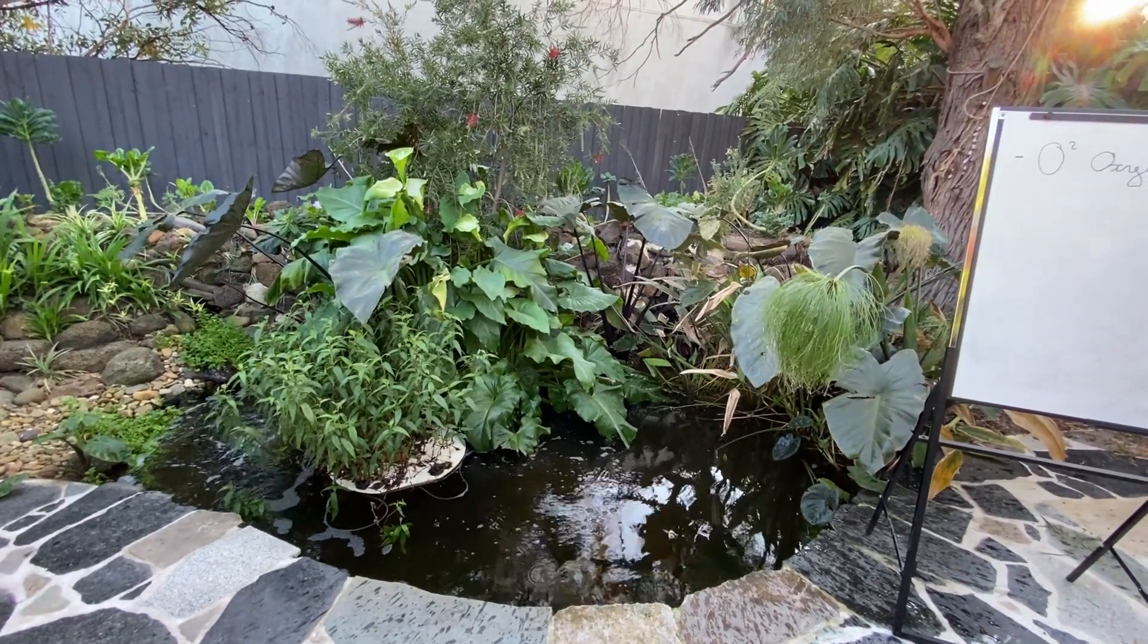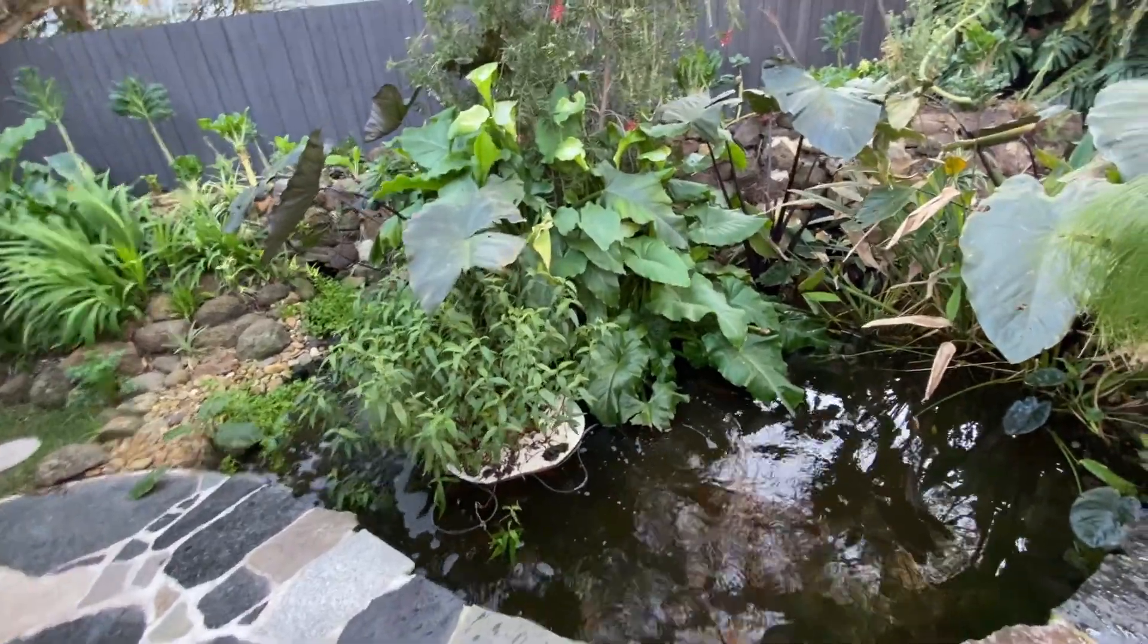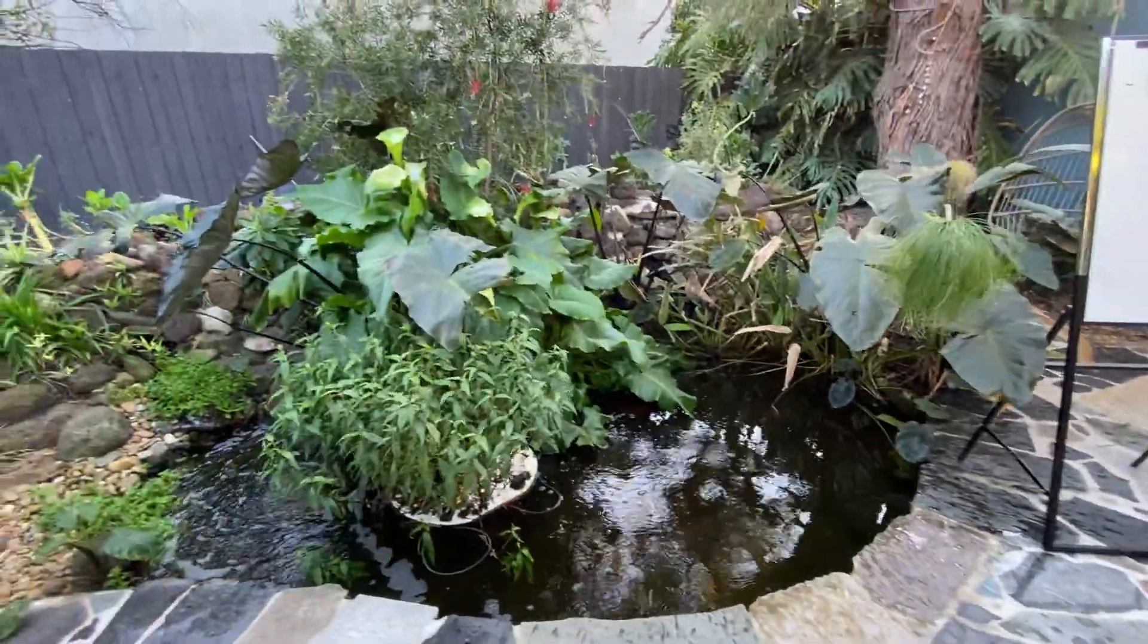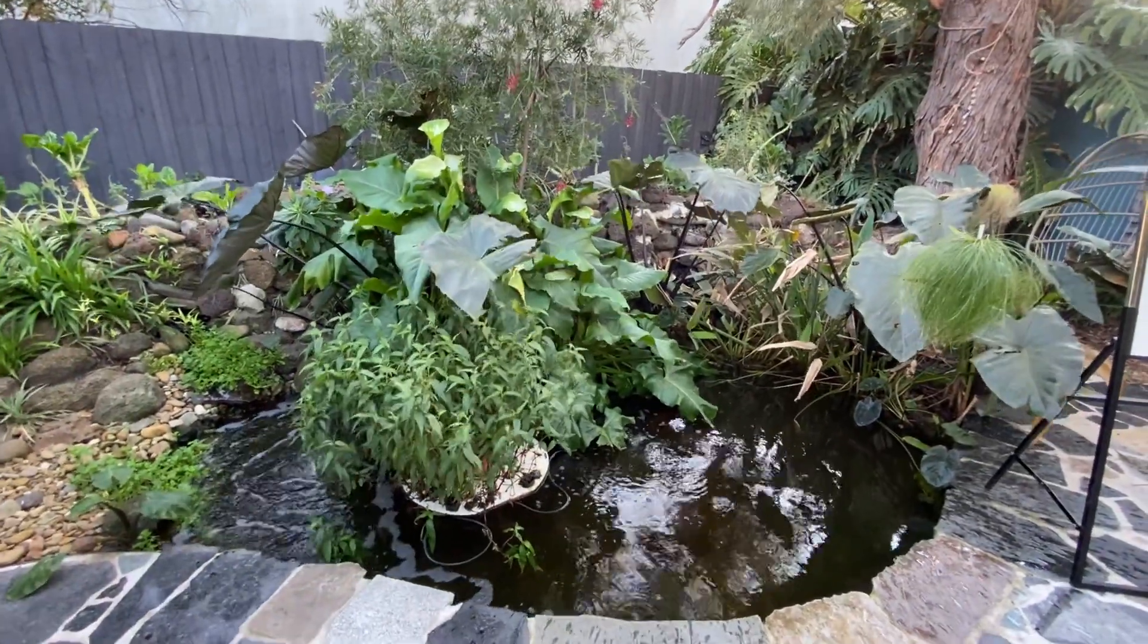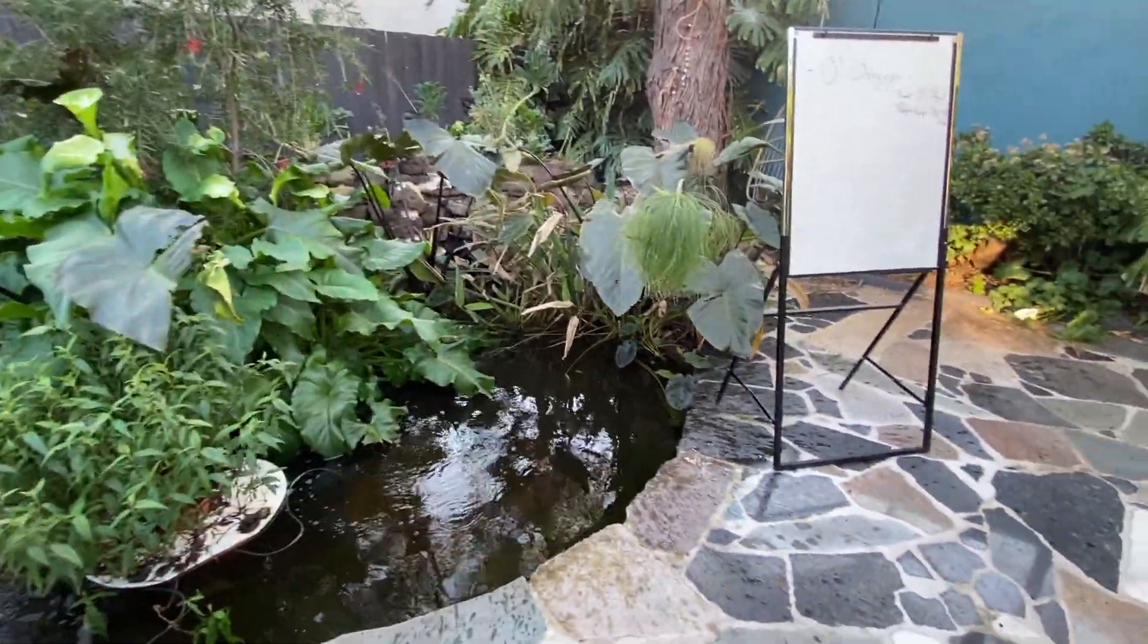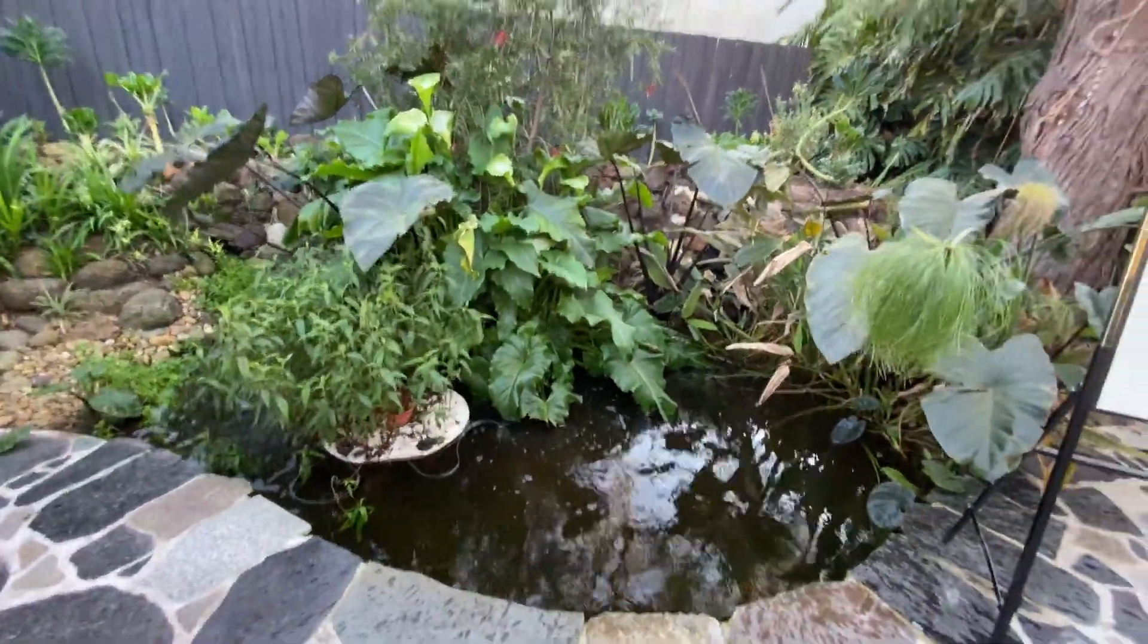So during the day, there are some algae, they create some oxygen in the pond, photosynthesis. And therefore you're thinking, oh, that's fine, there is enough. The fish are looking good. But during the night, the plants are not producing oxygen and the fish are consuming. So everything is going down and the oxygen concentration in the morning can be very low.